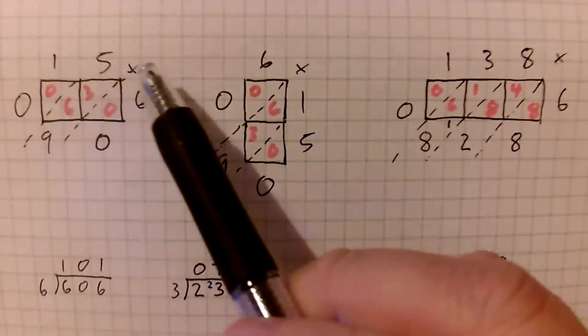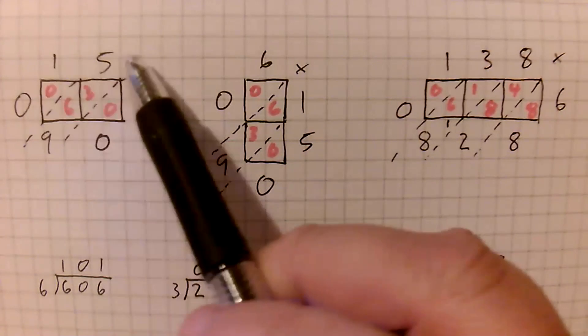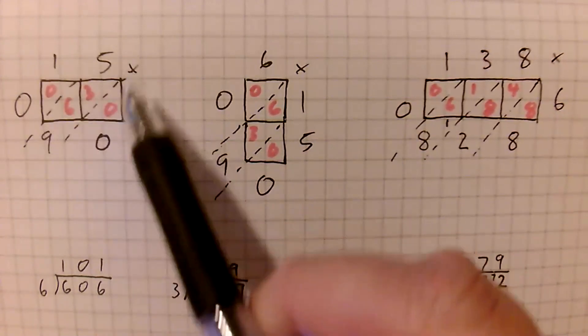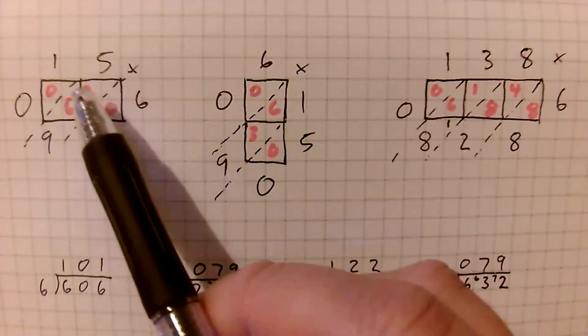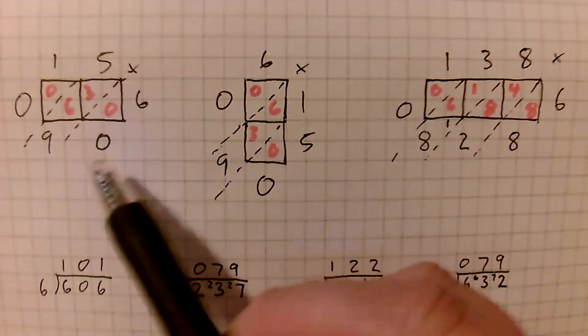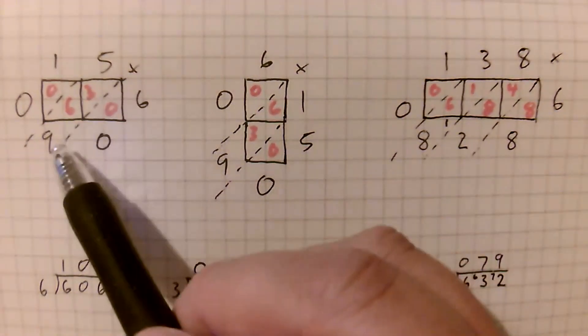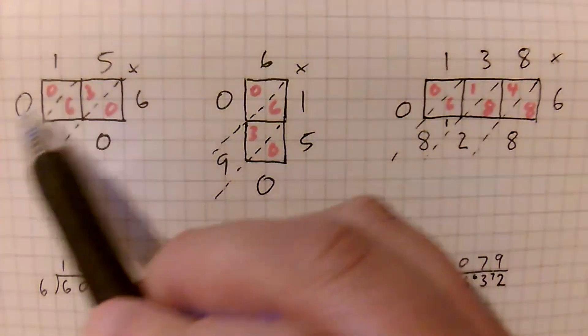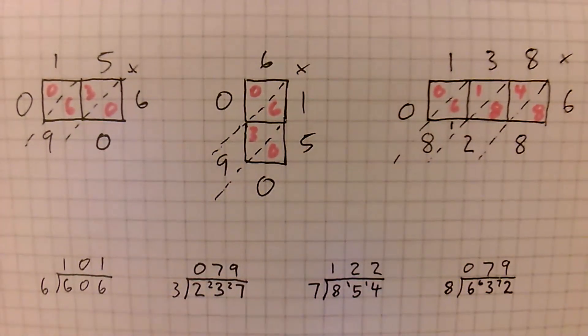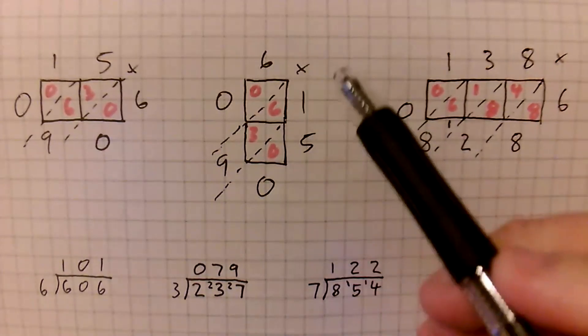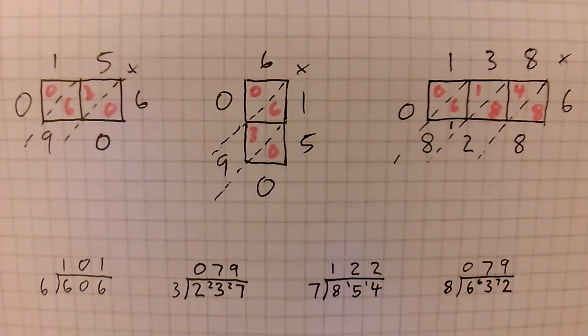So remember how we lay it out: 15 multiplied by 6. I like to make it look like the equation there, and we're filling in these numbers. One multiplied by six is six, five multiplied by six is 30, and then add the diagonal. So in the first diagonal is a zero, the second diagonal three add six makes nine, third diagonal is just a zero, so the answer is 90. Six multiplied by 15 again, as we said it's commutative, so you just need to make sure that you're laying it out correctly and you should have ended up with the same answer.